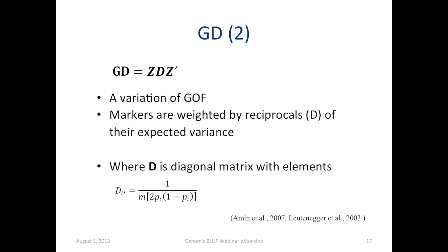Another way of calculation of genomic relationships is GD matrix. This is a variation of the previous matrix. The difference is weighing the ZZ prime matrix. So instead of using a different numerator, we are using reciprocals of markers expected variances. So G is a diagonal matrix. In the diagonal, we have elements of markers expected variances.